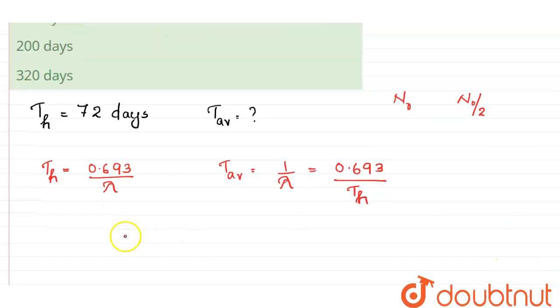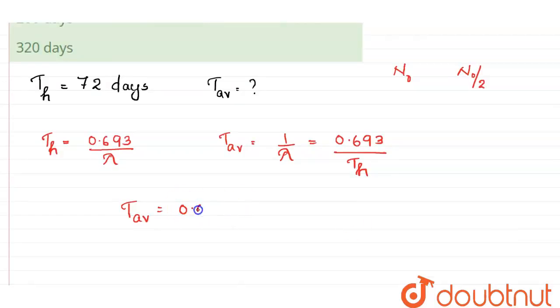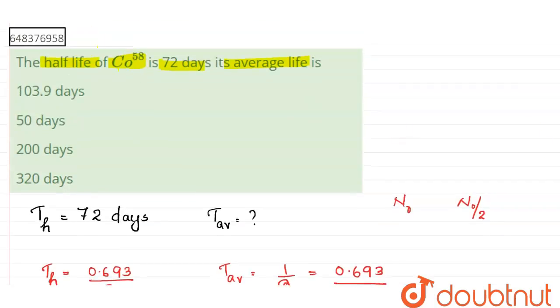Now, substituting the values in the equation we can write the average life time of a radioactive substance of cobalt 58 is 0.693 divided by 72, and that is equal to 103.9 days. So the average lifetime of cobalt 58 is 103.9 days. So our correct answer is the first option 103.9 days. Thank you.